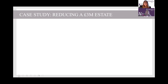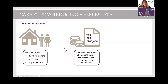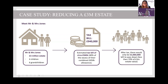We have Mr. and Mrs. James with a £3 million estate. We're getting more and more people like this because house prices are going up so much. They've got four children and six grandchildren, and they've got an estimated tax bill of £940,000 — nearly a million pounds in inheritance tax at 40% above their nil rate bands. After tax, there's only going to be just over £2 million left to pass down — less than 70% of the value of their estate.